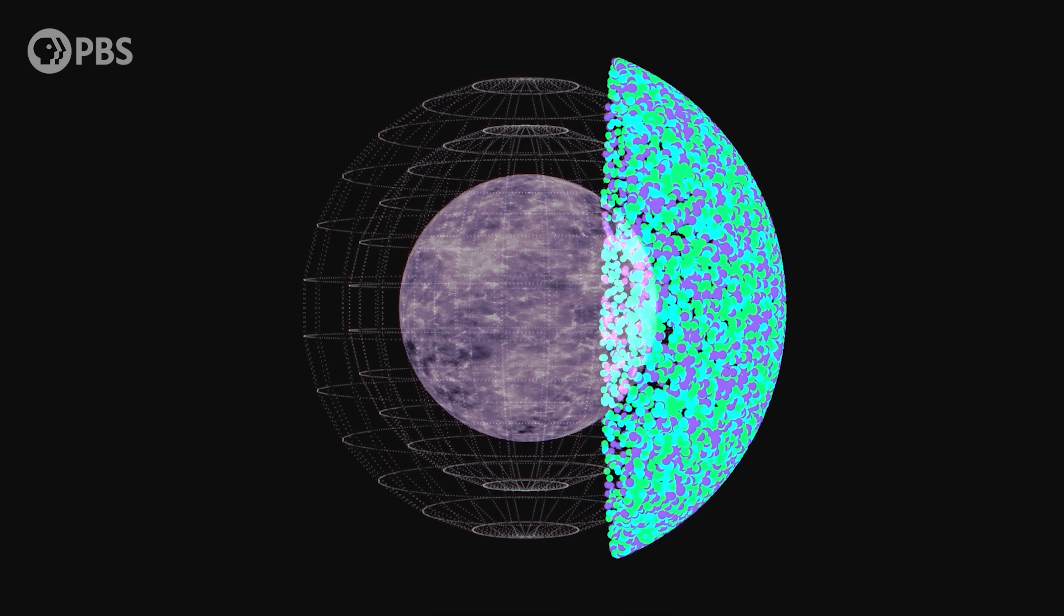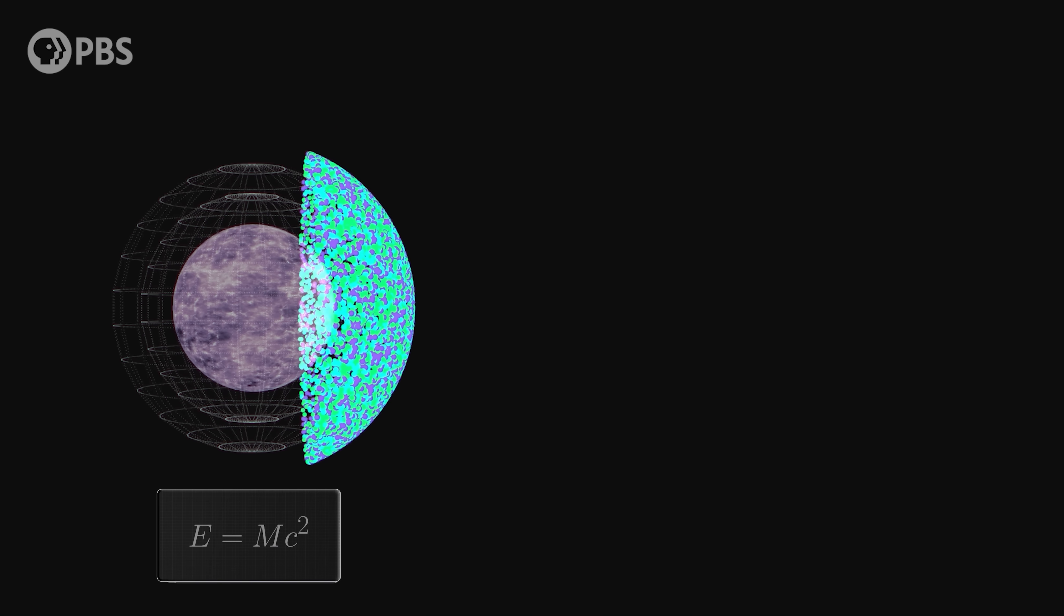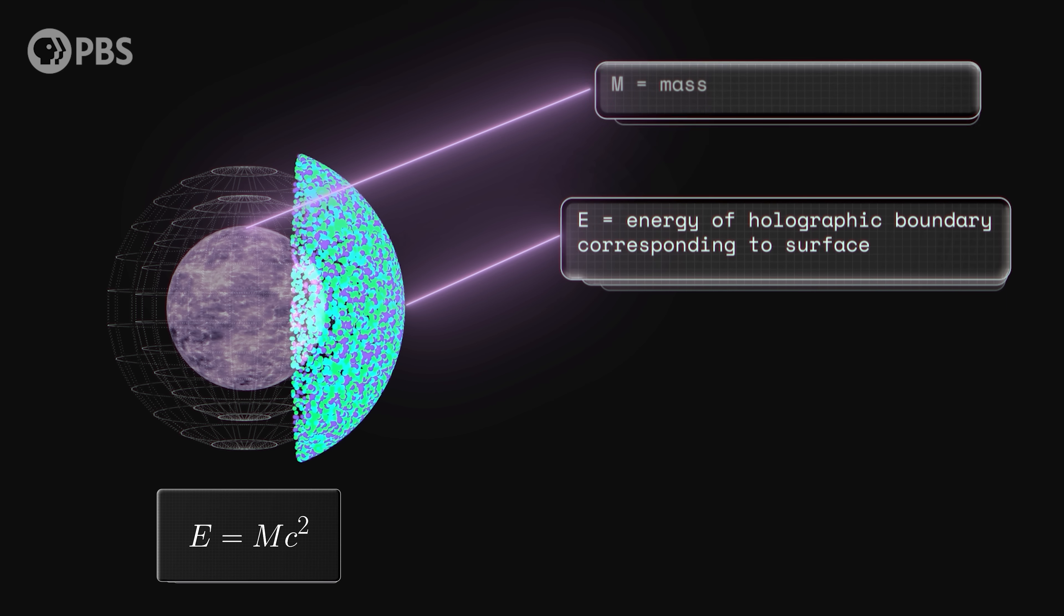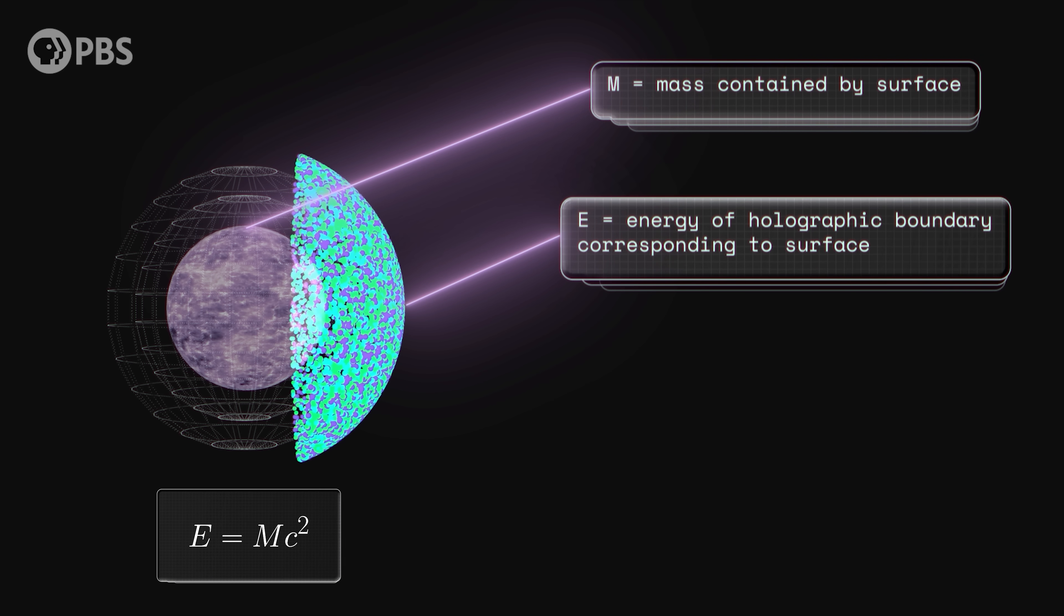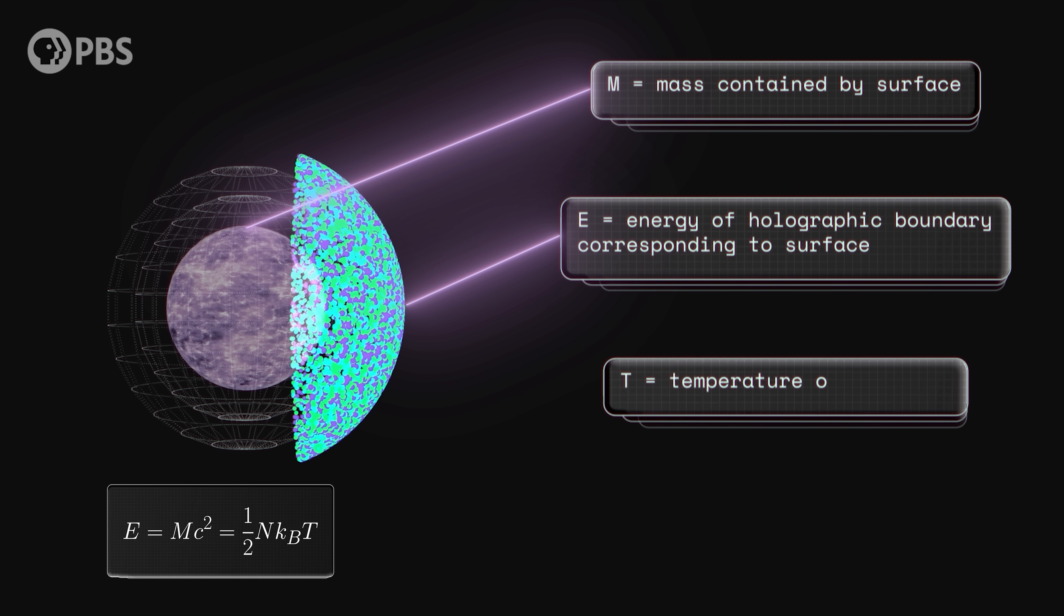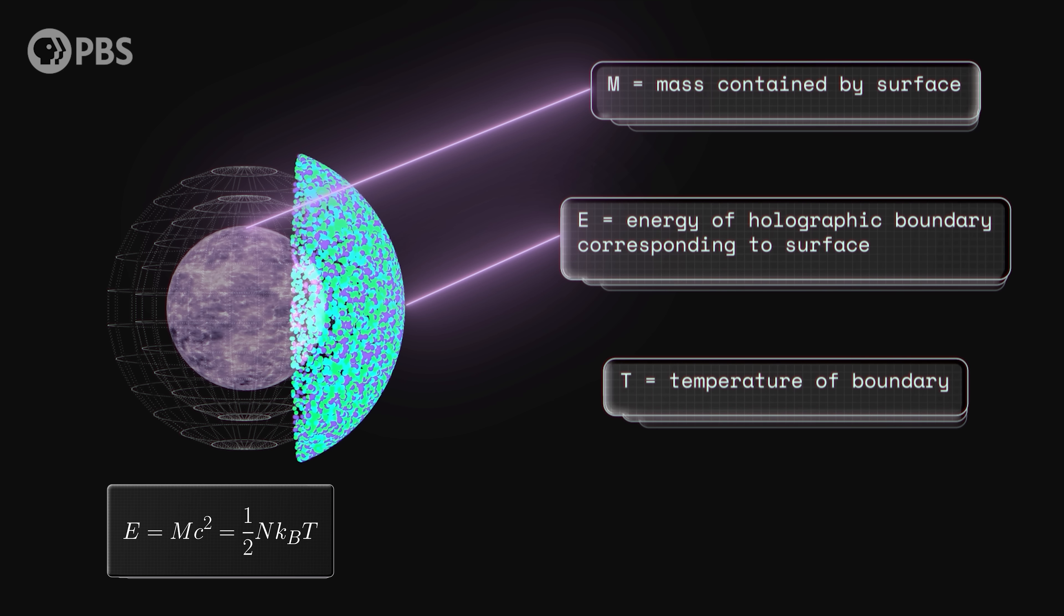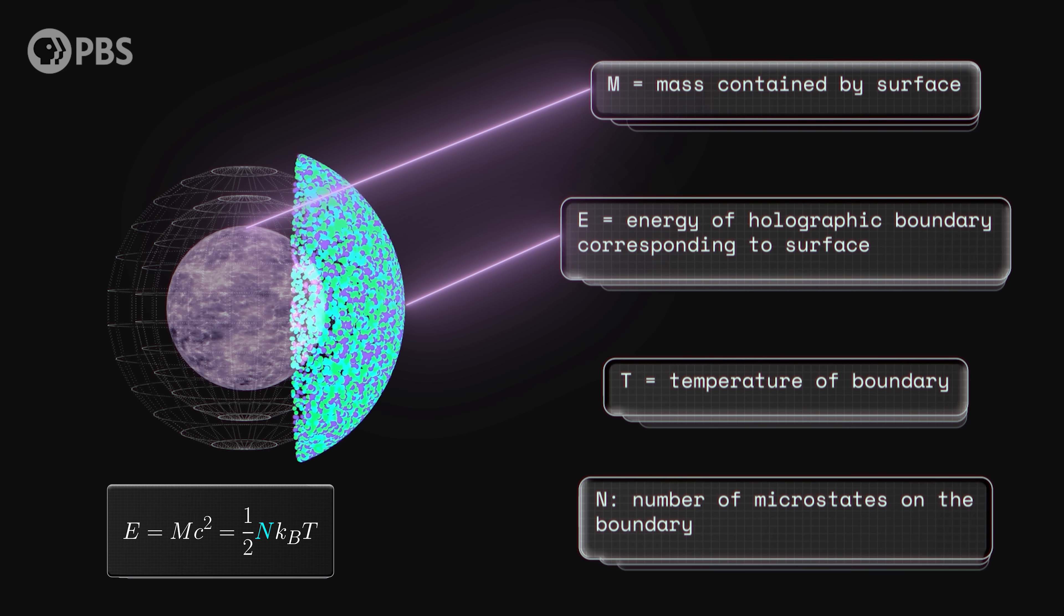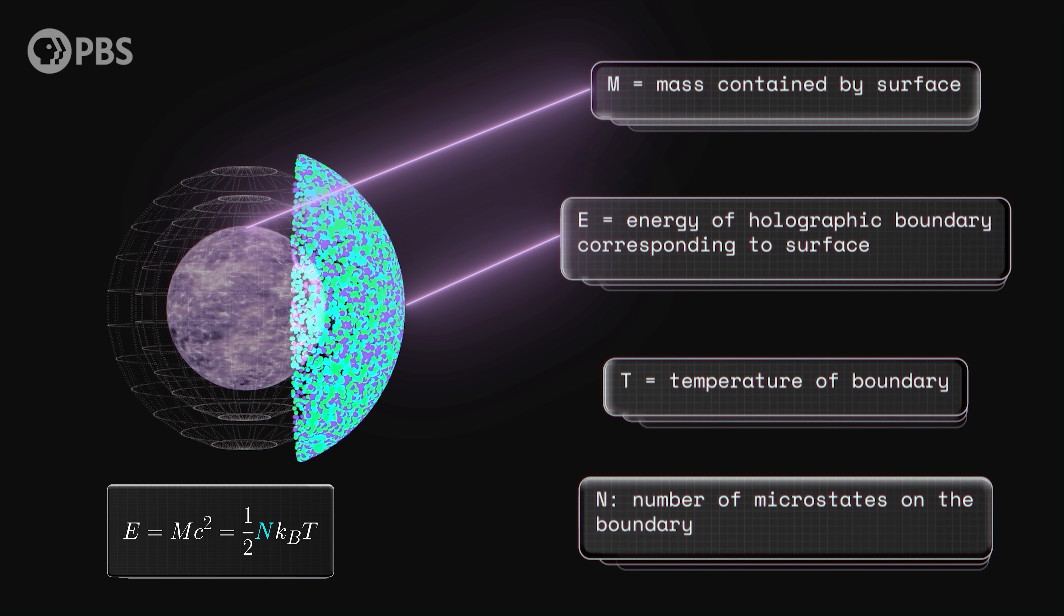Okay, hold on for just a little bit of math. We know that this surface contains a mass, so we can say that it also contains energy by Einstein's E equals mc squared. That's the energy of the interior, but it also has to be the energy of the corresponding holographic boundary. We can also give that boundary a temperature, assuming the stuff on the boundary is in thermal equilibrium so that that energy is evenly spread over all possible states. And that n thing is just the number of possible states on the boundary and the total number of arrangements of particles inside the volume that would give you the particular values of energy, mass, and temperature. But that also corresponds to the amount of hidden information within the surface, its entropy.